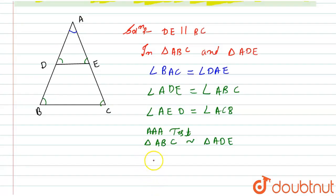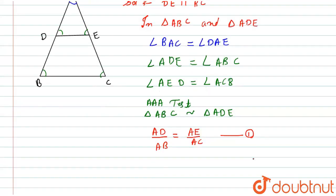From here I can say that AD upon AB, this ratio, will be equal to AE upon AC. Let this be equation number 1. Now I will take the reciprocal of this, so it will become AB divided by AD equals AC divided by AE.